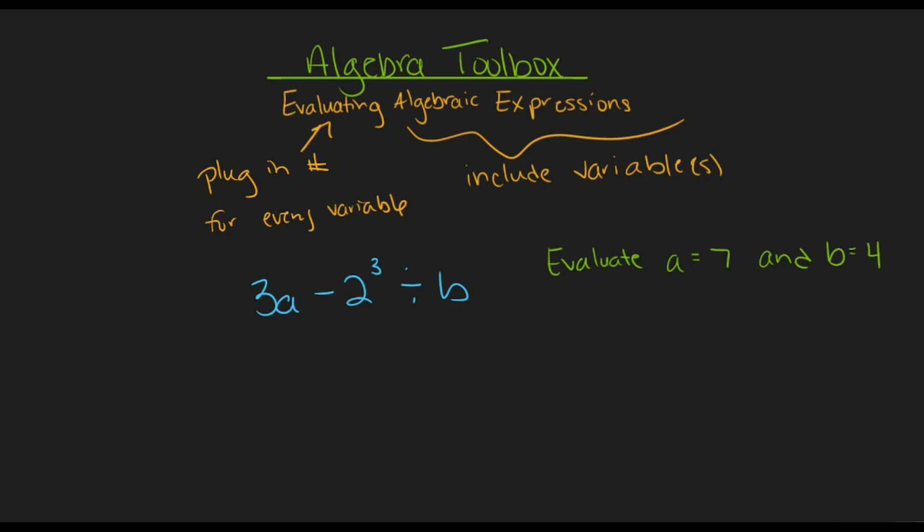What these two pieces of information are telling us are the numerical values that are represented by the different variables inside of our expression. So what this means is every place we have an a, we can replace it with a 7. And every place that we have a b, we can replace it with a 4.